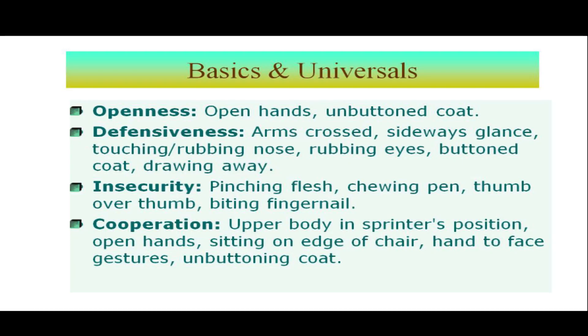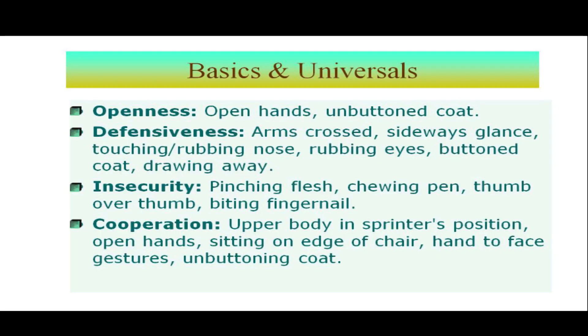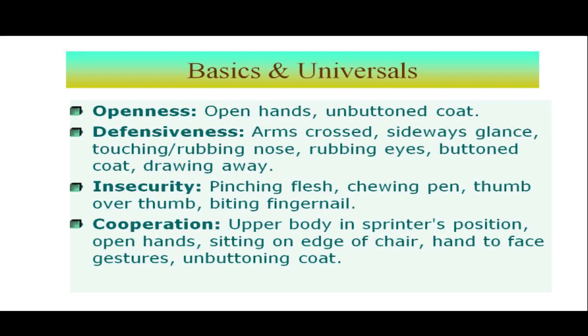In terms of more basics and universals: any gesture that is open — as opposed to crossing — indicates openness. Open hands, open palms, even a coat that is unbuttoned — all indicate 'I am open, I am honest, I am truthful, I am free to talk to you.' The opposite is defensiveness: arms crossed, looking sideways while talking, not maintaining eye contact, touching or rubbing the nose, rubbing the eyes, a buttoned coat, or drawing away. When the other person keeps moving away as you talk, it indicates they are in a defensive mode. Insecurity is indicated in many simple ways, most of the time done inadvertently.